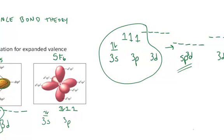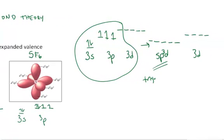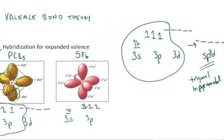So any time we have trigonal bipyramidal electron configuration, we can expect to have sp³d hybridization. An analogous story for the sulfur,